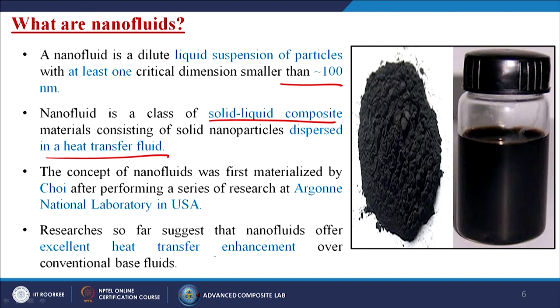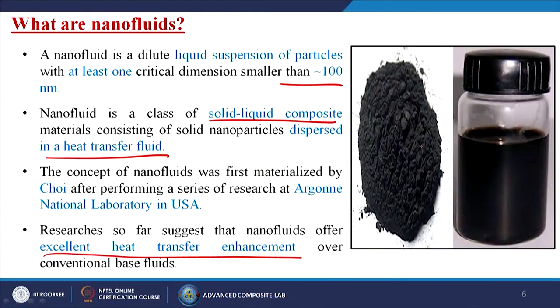When we add any third-party material into the fluid, it increases certain properties. In the image we can see powder being added into the base fluid up to a certain concentration — maybe 5%, 10%, or 20%, depending on the performance enhancement needed. If we add too many nanoparticles, it may sometimes reduce all the properties due to agglomeration or other problems.